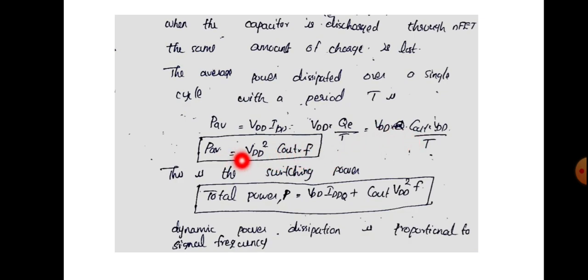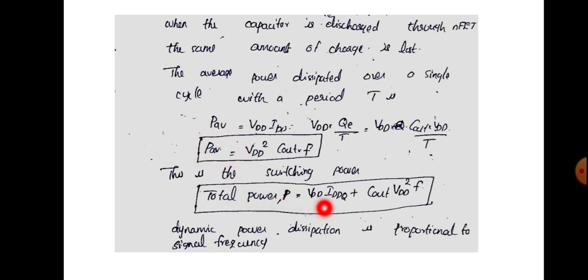Since 1 by T equals frequency f, we can write the average switching power as P equals VDD squared times Cout times f. The total power is equal to VDD times IDDQ (the DC power) plus VDD squared times Cout times f (the dynamic power).